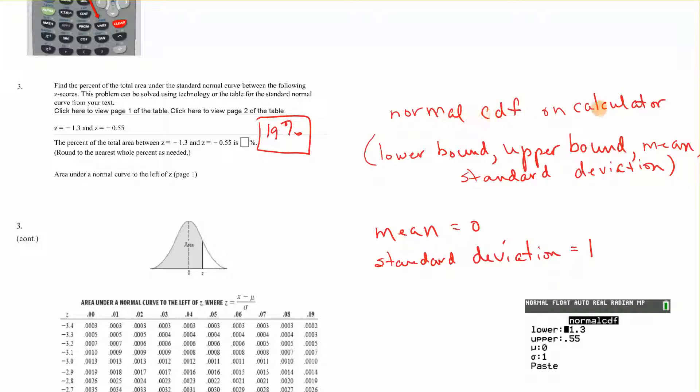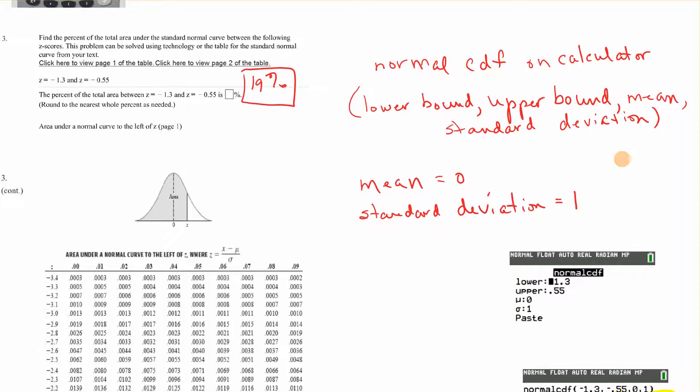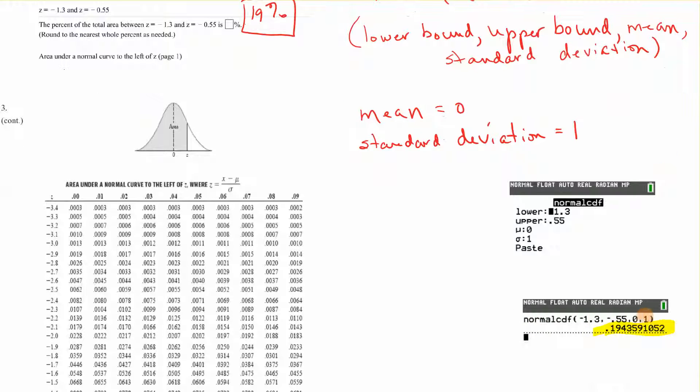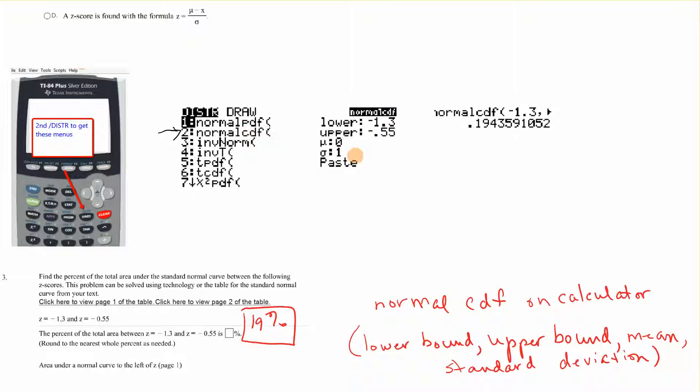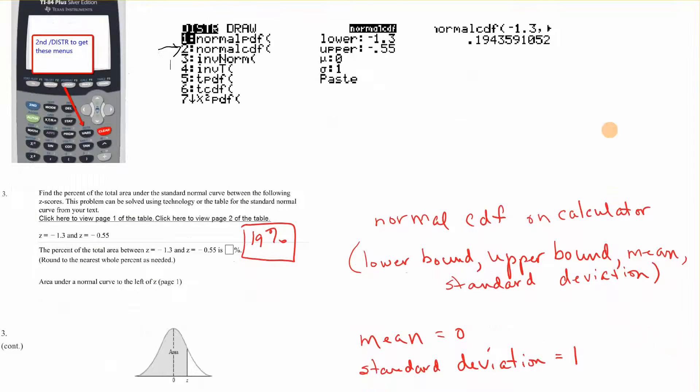Find the percent of the total area under the standard normal curve between the following z-scores. You find normalCDF on the calculator with a lower bound, upper bound, mean, and standard deviation. For these, the mean is 0, standard deviation is 1. On the much newer calculator, when you do normalCDF, the mean and deviation are already in there. You get your answer and convert it to percent. That would be 19%.